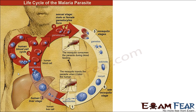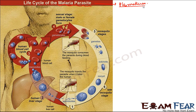Let us quickly look at the life cycle of the malarial parasite. The malarial parasite is Plasmodium. Looking at its life cycle, Plasmodium actually has two hosts. Half of its life cycle it lives inside the human body, and the remaining half it lives inside the female Anopheles mosquito.